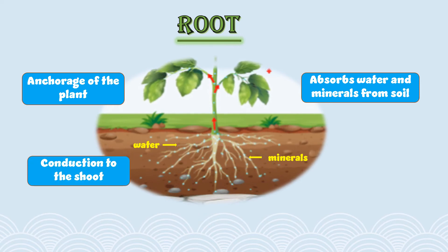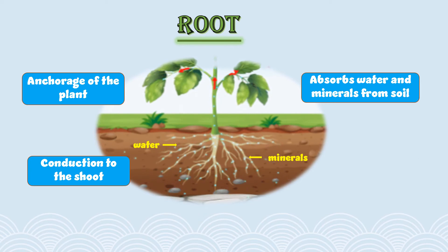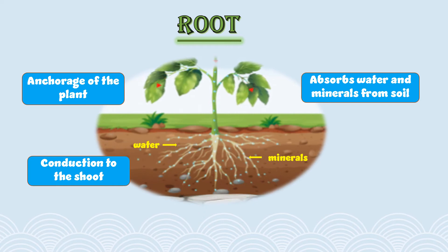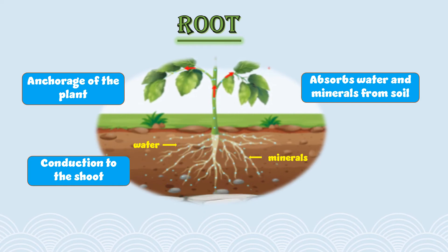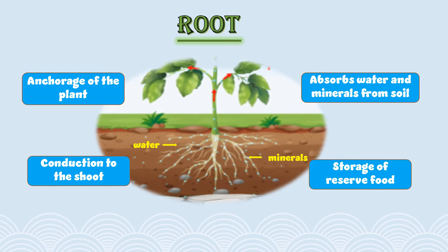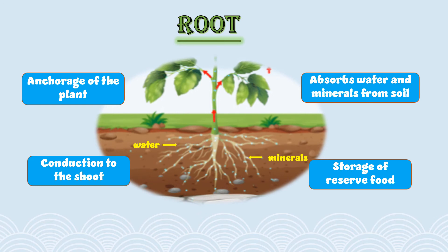Root also does the conduction of water and minerals to the shoot system. You can see right now how the water and minerals are being conducted to the shoot system of the plant. Root also keeps a reserve of food which is utilized by the plants later on.